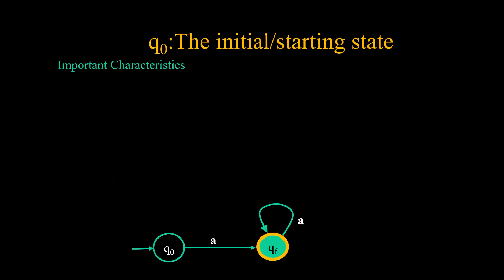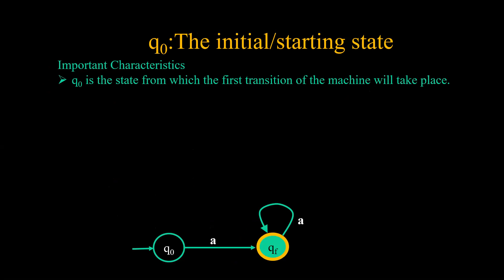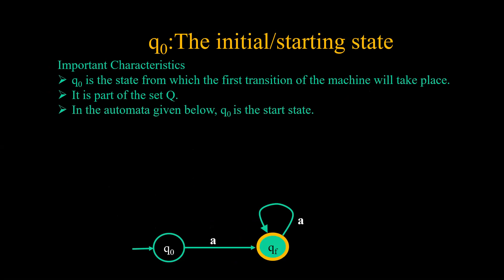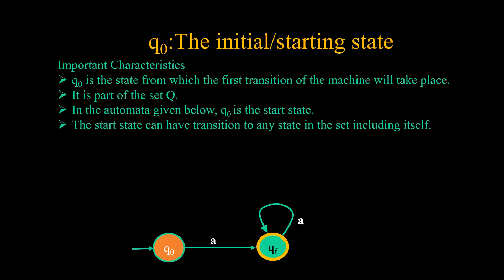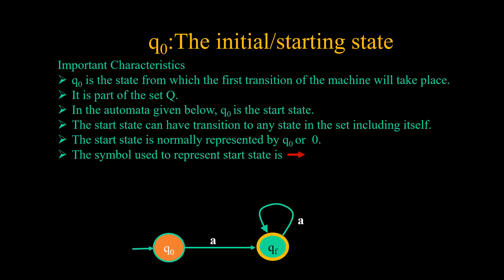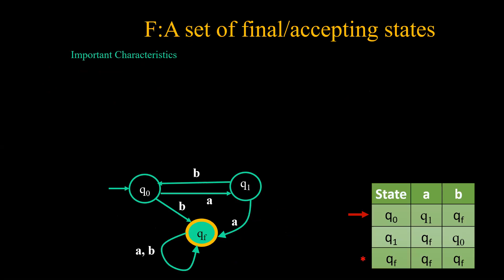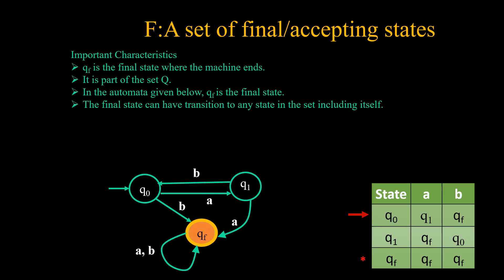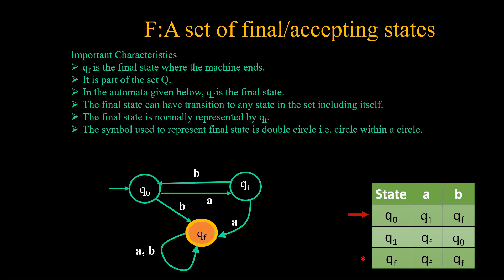Next we come to Q0, the start or initial state. Q0 is the state from which the first transition of the machine will take place. It is part of set capital Q. Start state can have a transition to any state in the set, including itself. It is normally represented by Q0 or 0, and the symbol used is a straight arrow. The final state F is where the machine ends. The final state can also have transitions to any state including itself. It is normally represented by QF, shown with a double circle — a circle within a circle. Finite automata can have one or more final states.